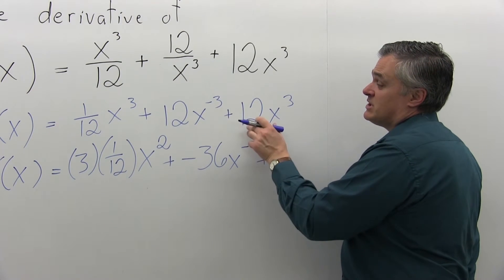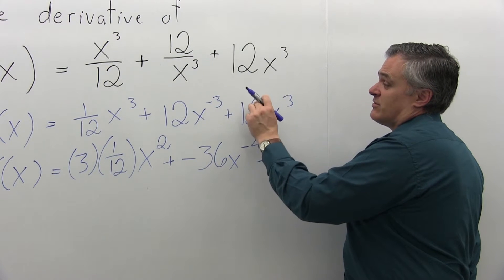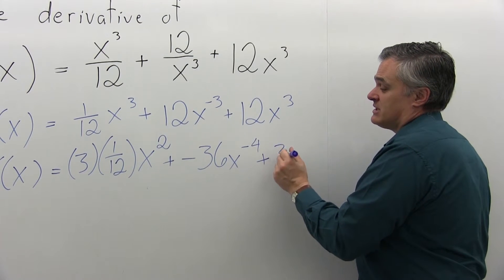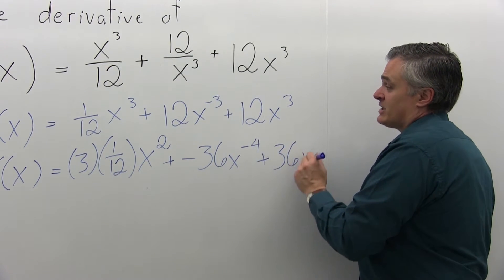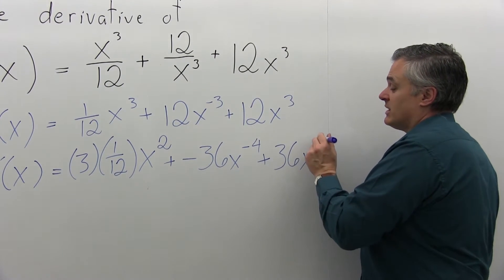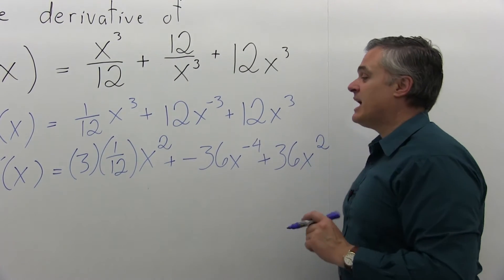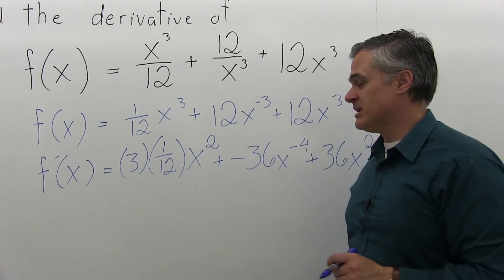And now finally, the piece on the end, 12x³, the exponent of three comes down times the 12. You have 36, x to the one less power—third power, one less power is second power. Now that is the answer, but I should really clean it up a little bit.